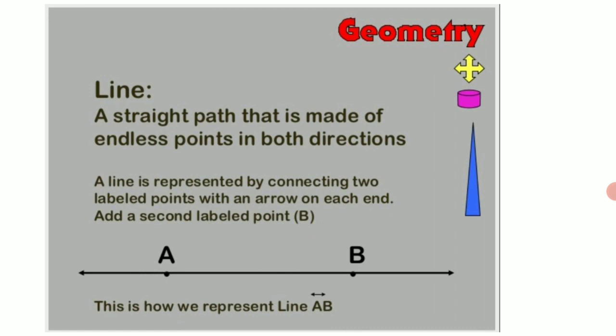Here children, you can see the line AB that is marked by a bar on the top and two arrow heads on both the directions.